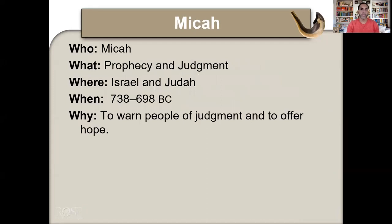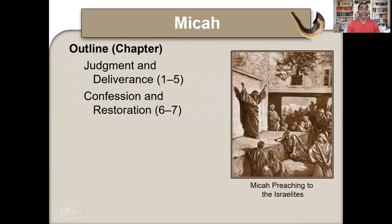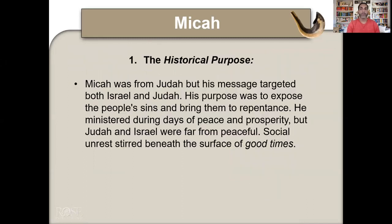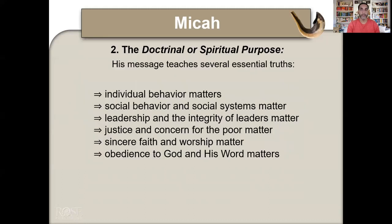Now Micah — the sixth book of the minor prophets. Prophecy and judgment for both Israel and Judah, 730 to 698 BC, to warn people of judgment and to offer hope. Judgment and deliverance in chapters 1 through 5, confession and restoration in chapters 6 through 7. Micah was from Judah but his message targeted both Israel and Judah. His purpose was to expose the people's sins and bring them to repentance. He ministered in days of peace and prosperity, but social unrest stirred beneath the surface. His message teaches: individual behavior matters, social systems matter, leadership and integrity of leaders matter, justice and concern for the poor matter, sincere faith and worship matter, obedience to God and his word matters.